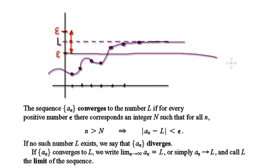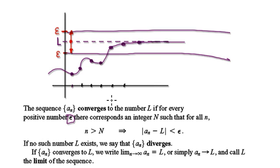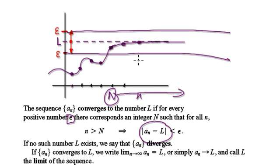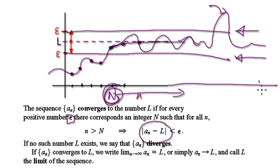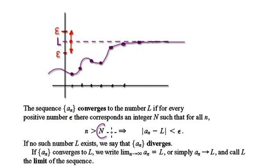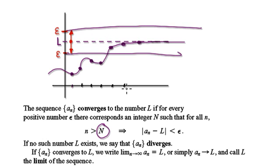So what it means is: for any given epsilon, there must exist a capital N, where all small n bigger than capital N — if you look at the difference of the two — the sequence stays within here and within here. So it cannot go outside these bounds. There must exist a capital N where, beyond that capital N, the sequence must stay within these two lines here.